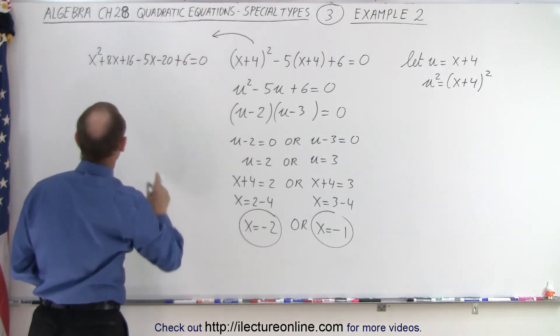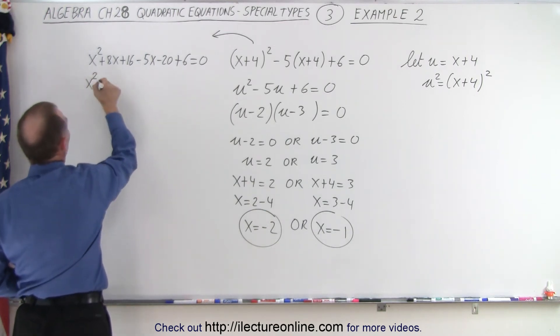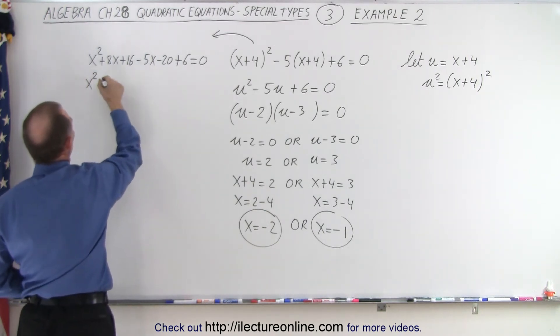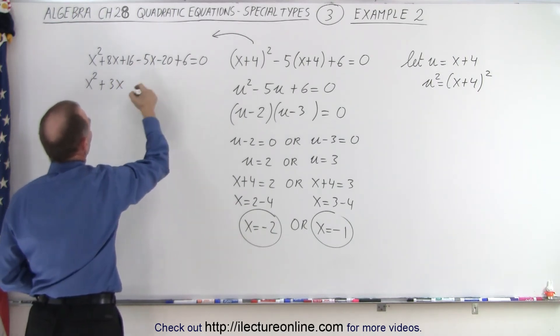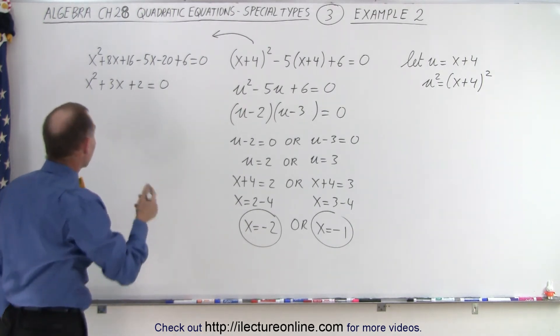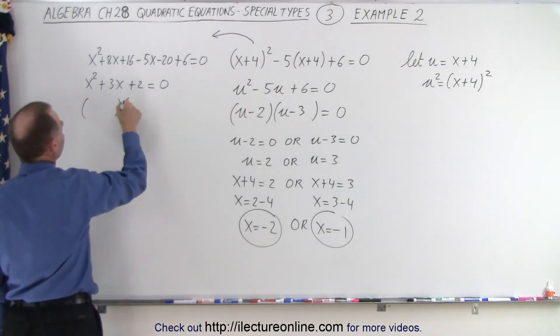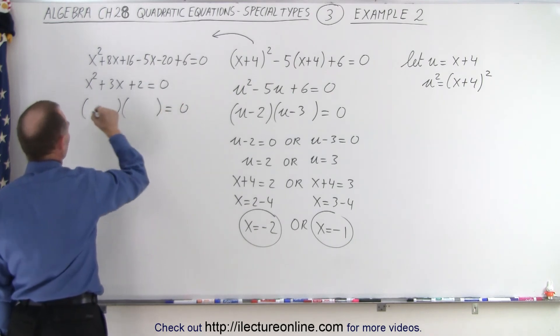Now we can simplify that. If we do, we end up with x squared plus 8 minus 5, that would be plus 3x. 16 minus 20 minus 4 plus 6 would be plus 2 equals 0. And now we can solve that equation. And we can probably factor that.